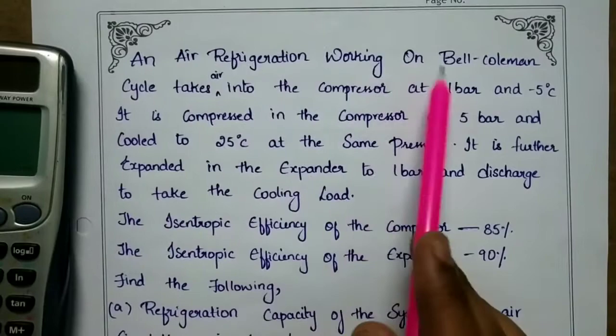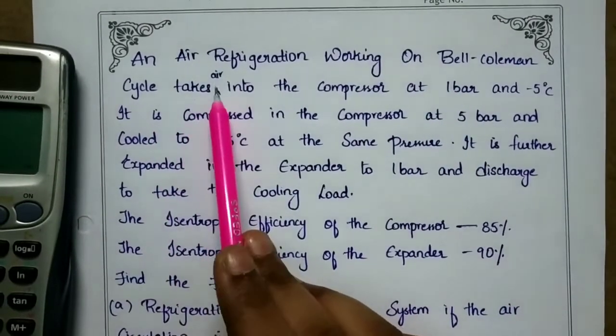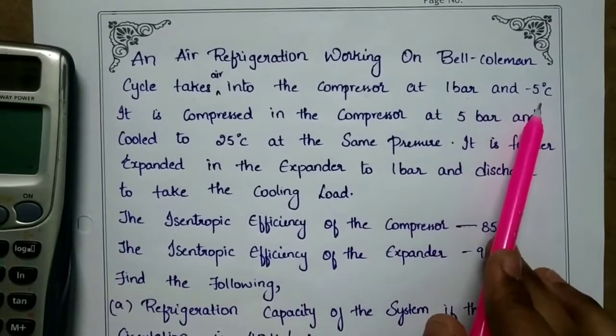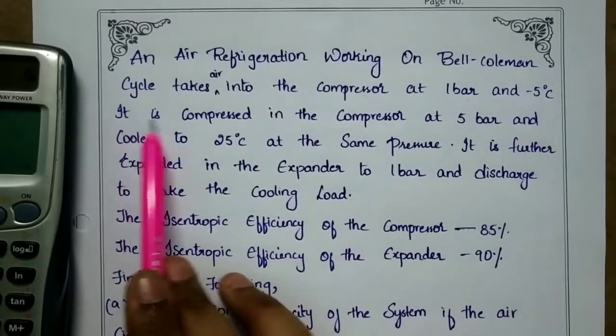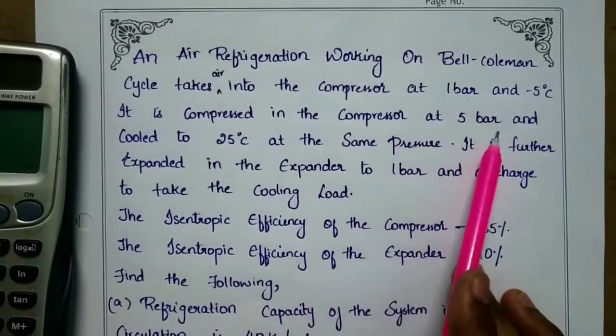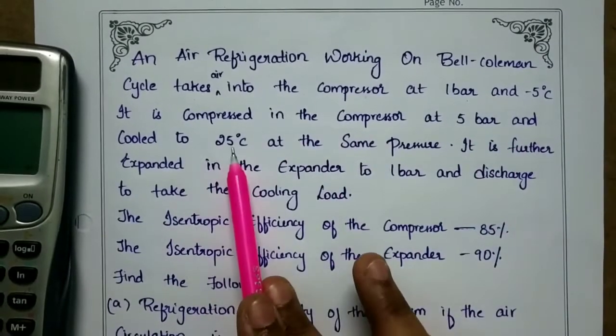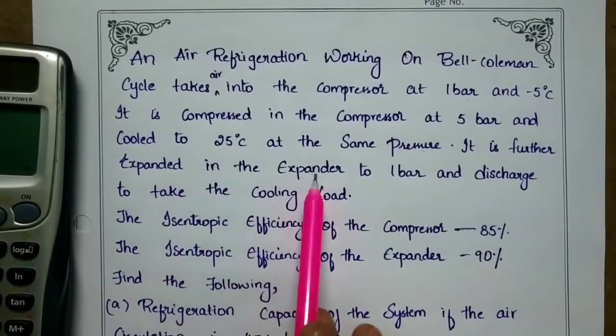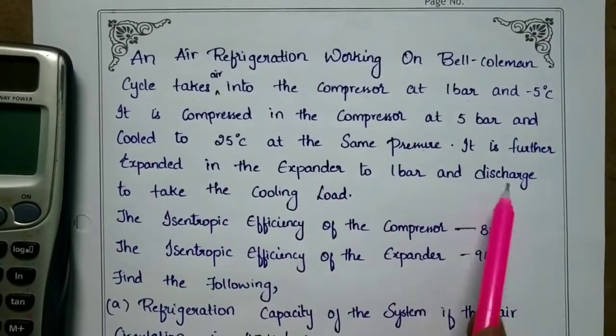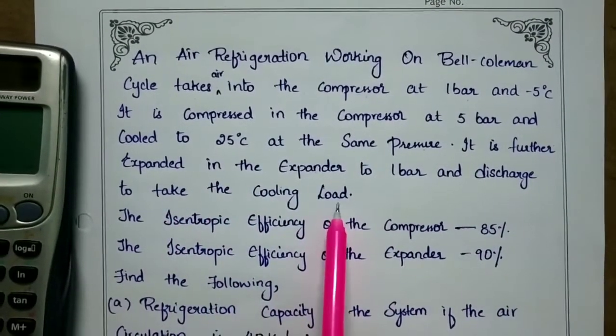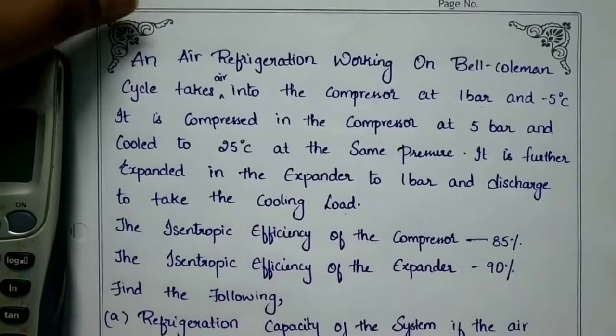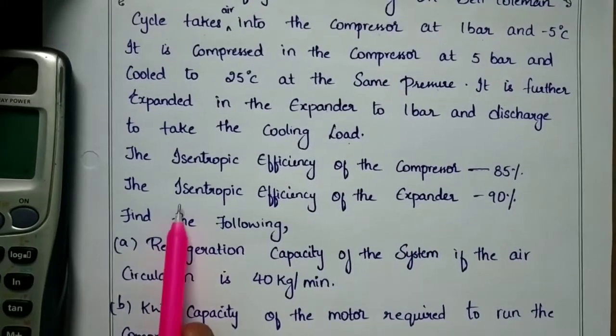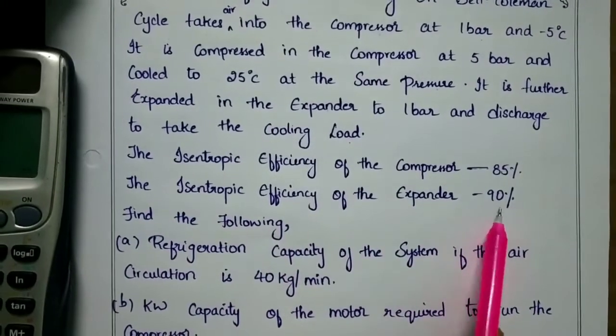An air refrigerator working on a Bell-Colman cycle takes air into the compressor at 1 bar and minus 5 degrees Celsius. It is compressed in the compressor at 5 bar and is cooled to 25 degrees Celsius at the same pressure. It is further expanded in the expander to 1 bar and discharged to take the cooling load. The isentropic efficiency of the compressor is 85 percent. The isentropic efficiency of the expander is 90 percent.